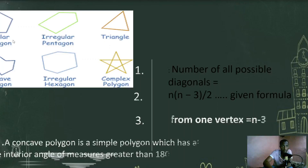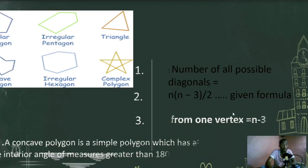Here we have a regular pentagon. We can draw the possible diagonals by using the formula n(n-3) over 2. This is the given formula for the number of all possible diagonals. We can draw from here up to here, from here up to here, from here up to here. You can calculate — n means number of sides.